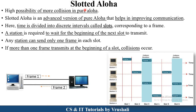The next type is Slotted Aloha. The possibility of collision is higher in Pure Aloha, so Slotted Aloha is an advanced version designed to improve communication between sender and receiver. It uses a method of slotting — every station is given a particular time slot, and only within that slot can a station send information over the shared cable.